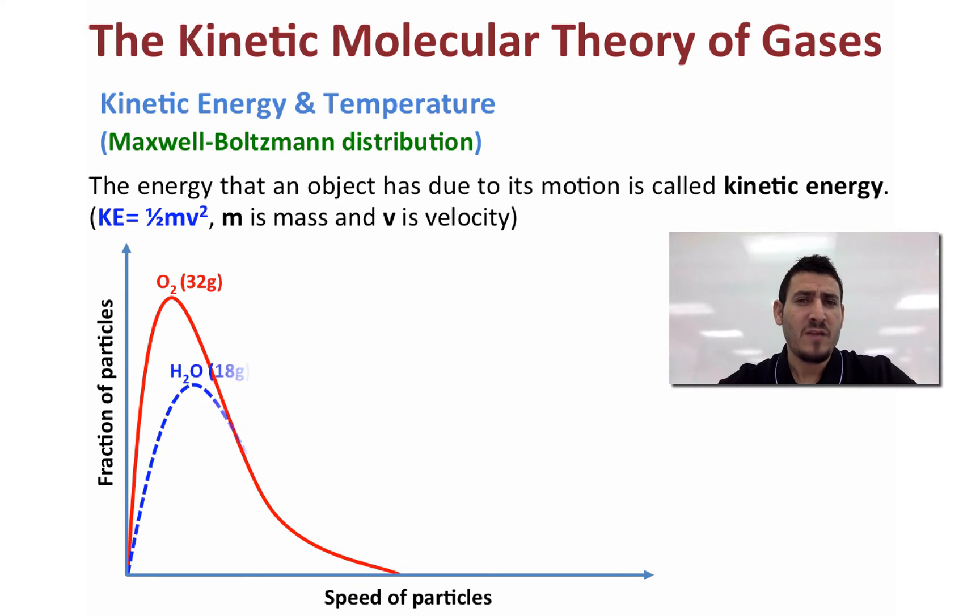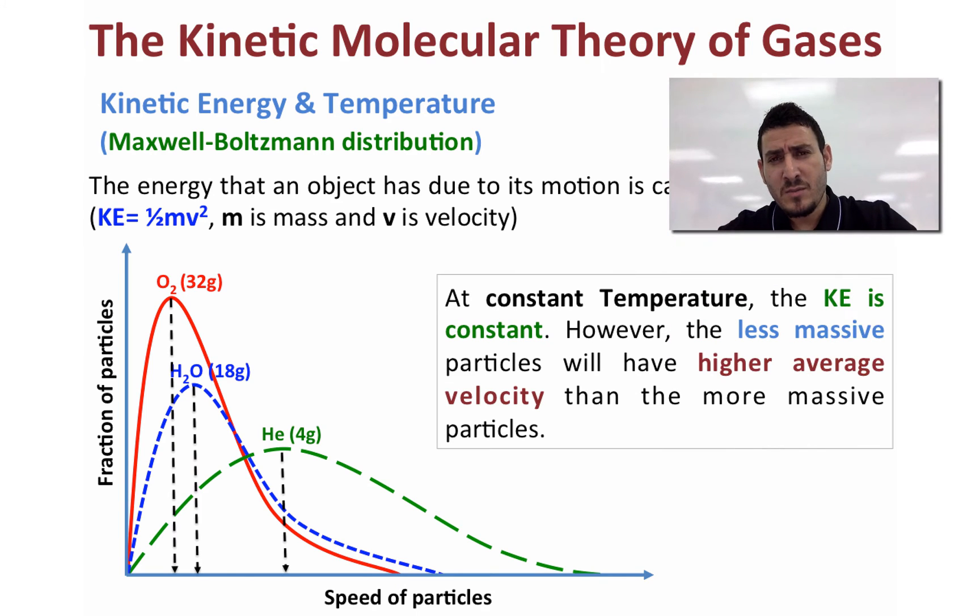So we can see that for heavier gases they have a lower velocity, however lighter gases they have higher velocity. But the average kinetic energy of the gas overall is going to be constant as long as the temperature is constant. The only thing that changes from one gas to another is the velocity of the gas particles. So at constant temperature the kinetic energy is constant. However, the less massive particles will have higher average velocity than the more massive particles.